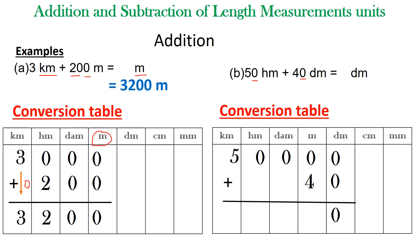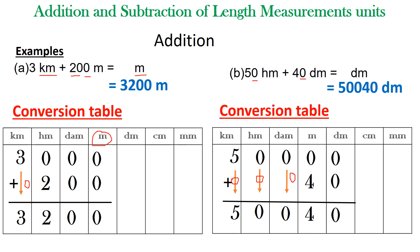Now you can add: zero plus zero is zero, zero plus four is four. Zeros can be brought down — they are meaningless but help confirm your work is correct. Five is brought down, and five plus zero is five. The answer is: 50 hectometers plus 40 decimeters equals 50,040 decimeters.